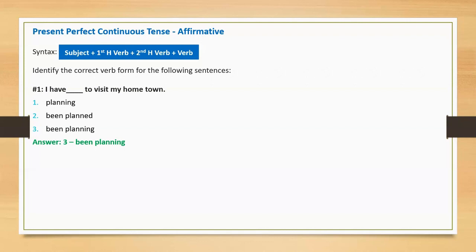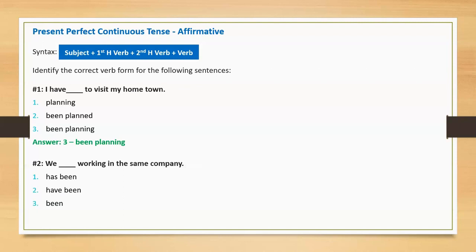Sentence two: 'We blank working in the same company.' Option one: has been. Option two: have been. Option three: been. Correct answer: have been. Full sentence: 'We have been working in the same company.'